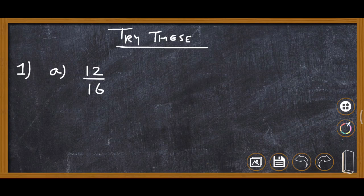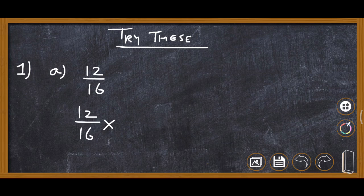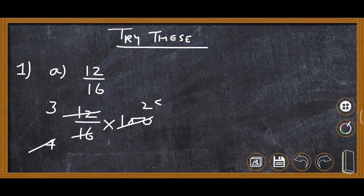We are doing question number 1 — convert the following into percentage. For converting into percent, we are required to multiply the number by 100. So here: 4 threes are 12, 4 fours are 16, and 4 twenty-fives are 100. So 3 multiplied by 25 gives us the answer 75%.